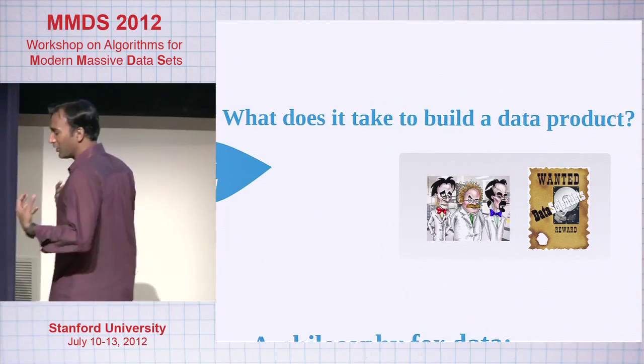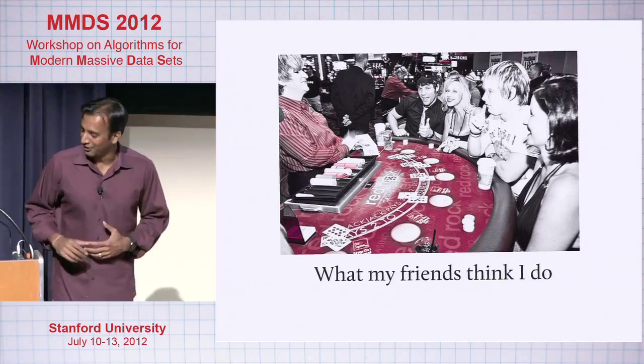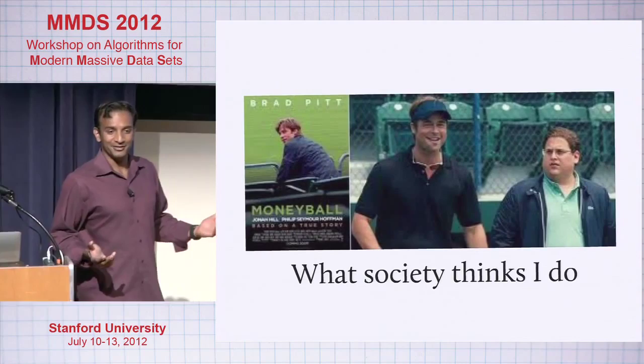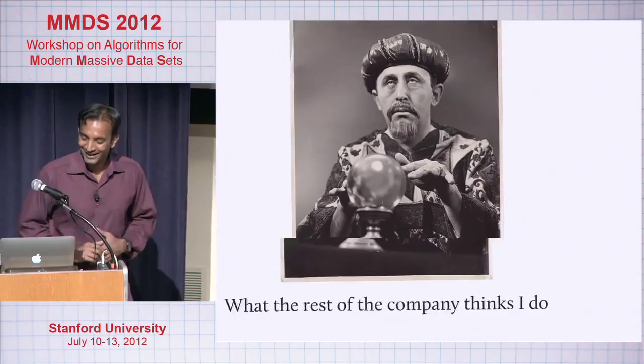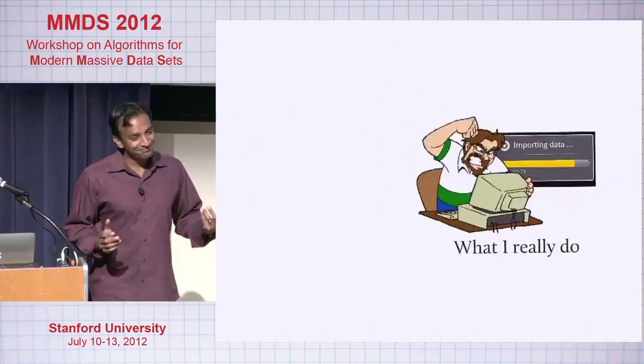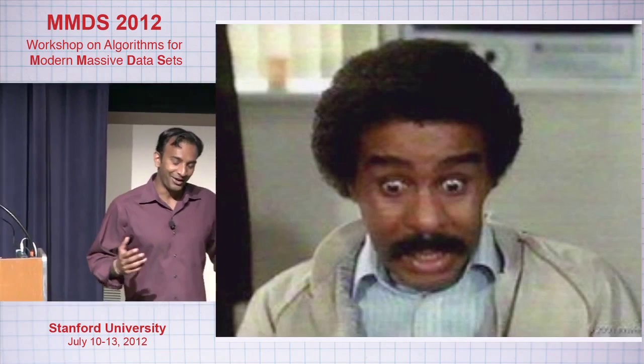Here's what my mom thinks I do. Here's what my friends think I do — it's pretty much just card counting, that's about the extent of their understanding. Of course, there's what society thinks I do, only defined by the latest movie. There's what the rest of the company thinks I do — or maybe in this case, the venture firm. Of course, this is what I think I do. And really, this is kind of the truth of the matter — you're trying to get the data in. And once you get the data, it really kind of feels like you're just like, oh man, this isn't really what's happening.